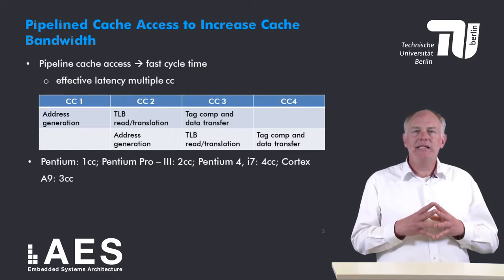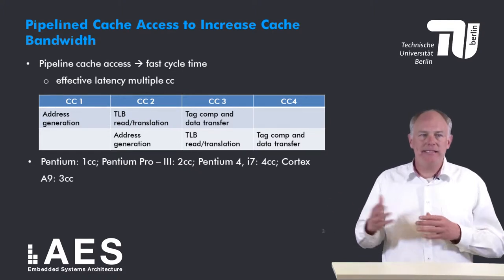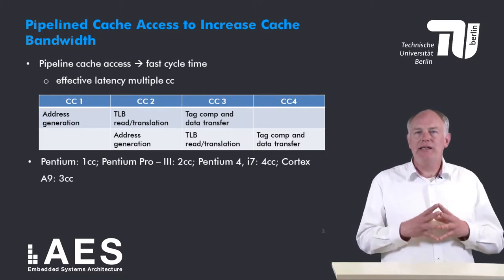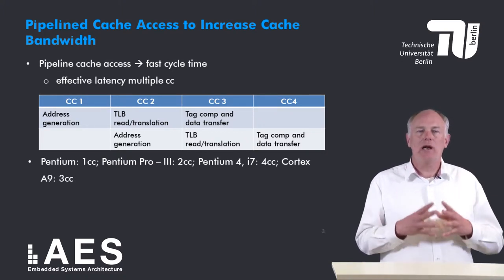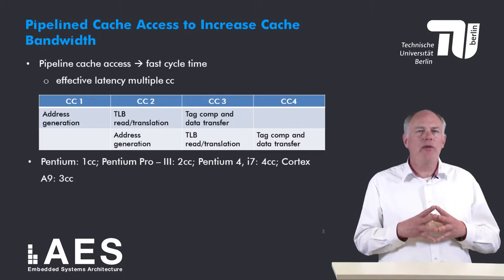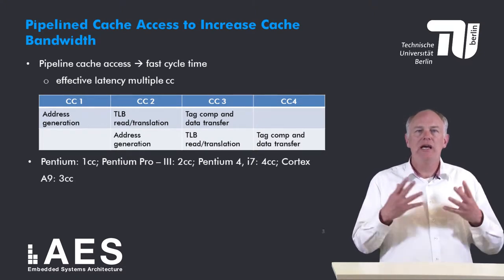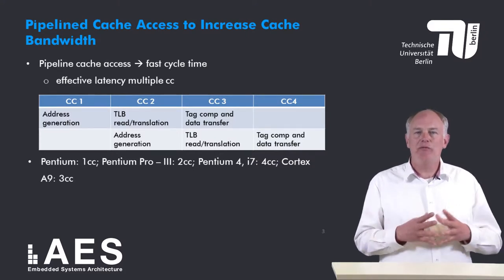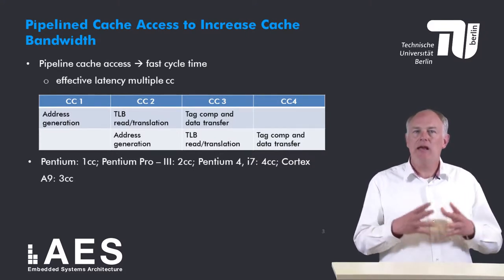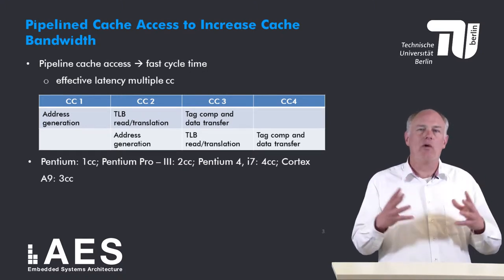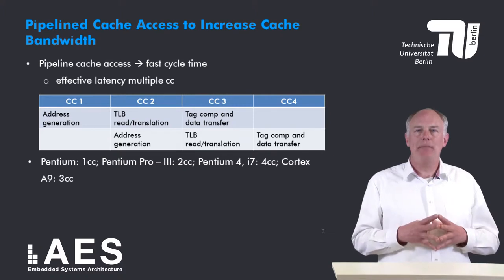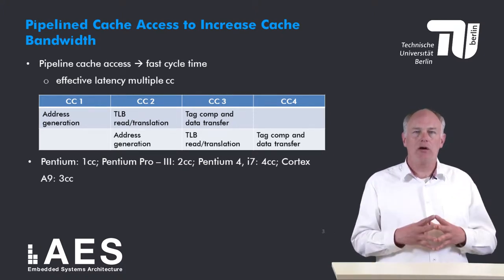Pipelined cache accesses are quite common. In the Pentium introduced in the mid-90s a cache access took one clock cycle. Beginning with the Pentium Pro to the Pentium 3 introduced in 2000 it took two clock cycles. In the Pentium 4 which became available in 2000 and in the current i7 it takes four clock cycles. The ARM Cortex A9 also has a pipelined cache access of three clock cycles.